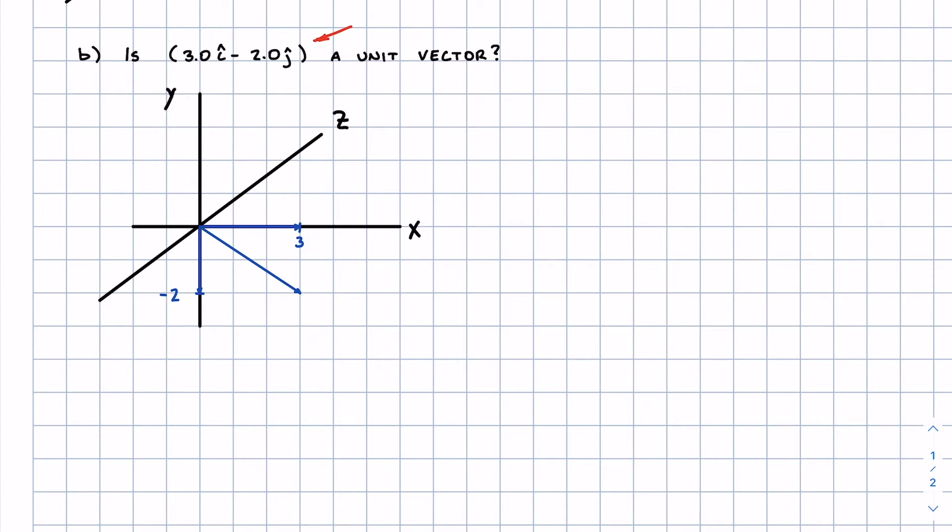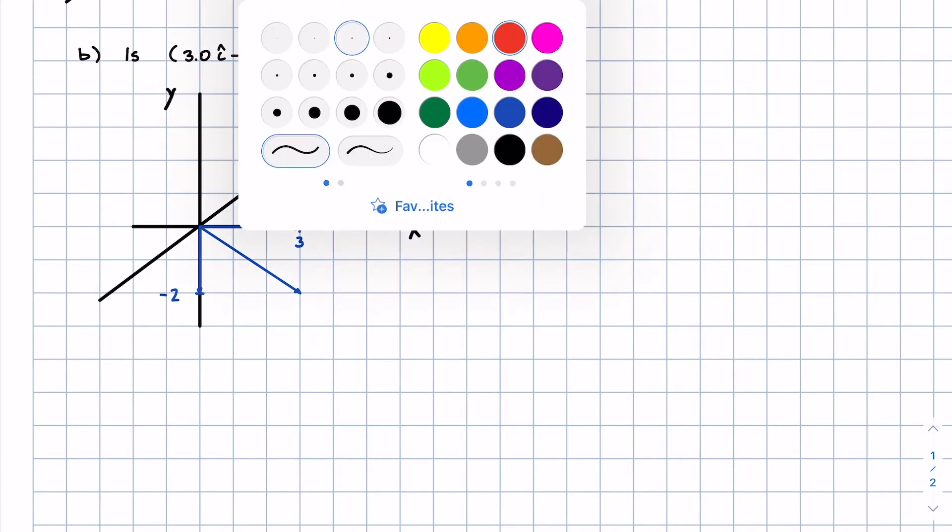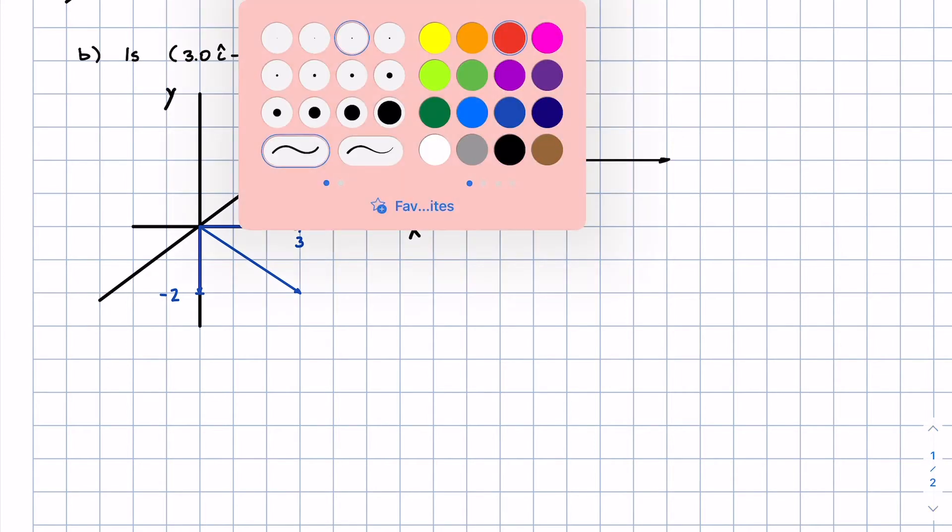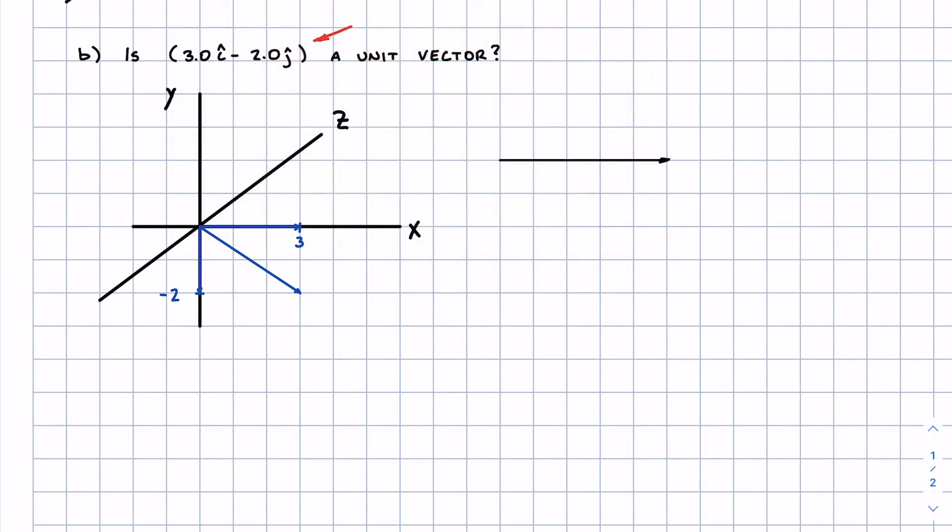3i hat minus 2j hat is like this. Here in the x direction we have our i vector. Sometimes I like to draw these where x is i hat, y is j hat, z is k hat. You can think about it like that too.